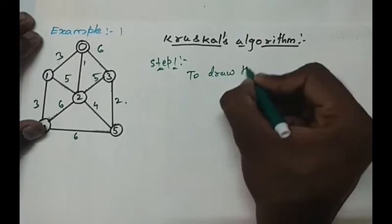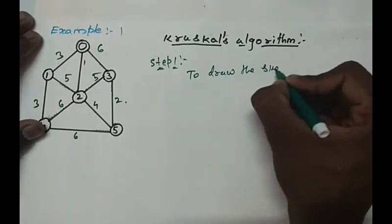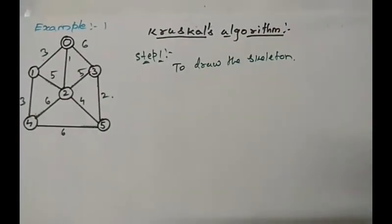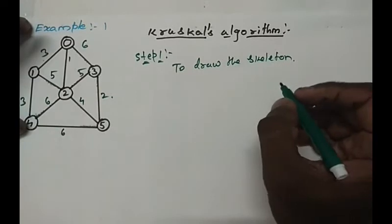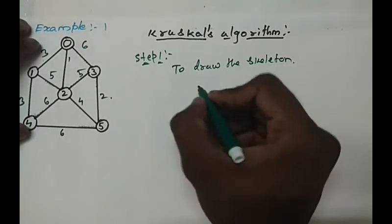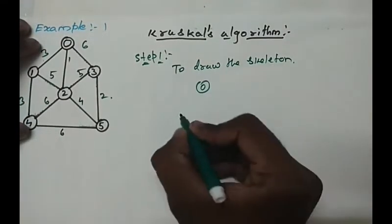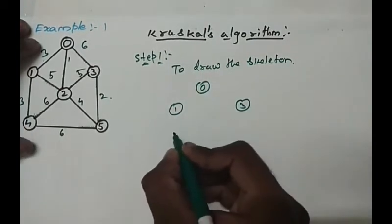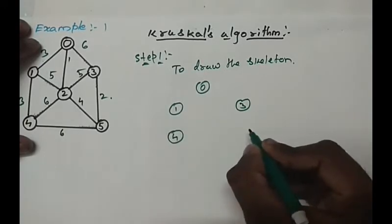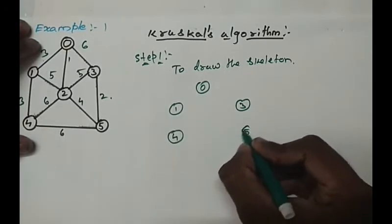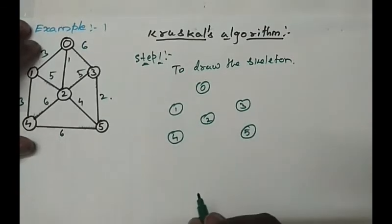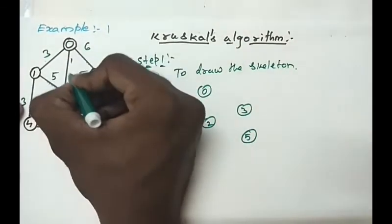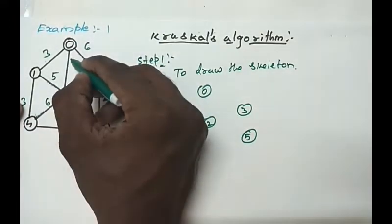So this is a tree which is 0, 1, 3, 4, 5 and center is 2. Next find the minimum value of it. So 0 to 2 is the minimum weightage.